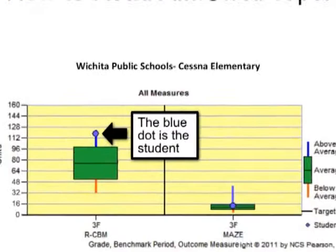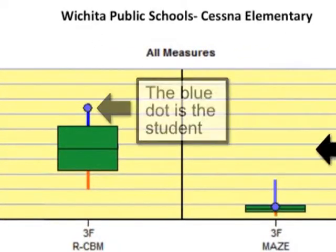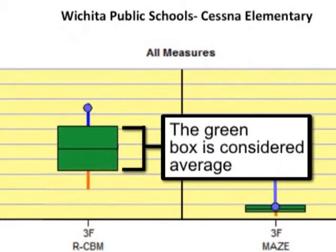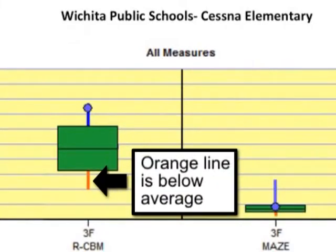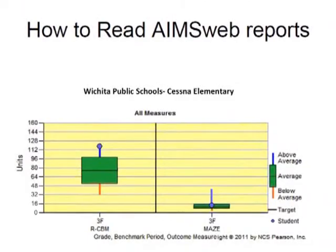The blue dot shows the performance level of the student on this particular benchmark assessment. The target is the goal for this assessment. The green box is considered the average range. Students falling within the orange line are considered below average for this target and are considered for tier two or tier three interventions. Students falling within the blue line are above average and are considered for enrichment.